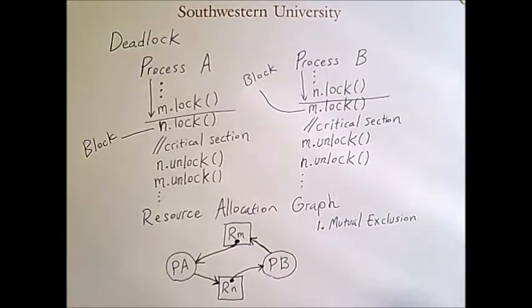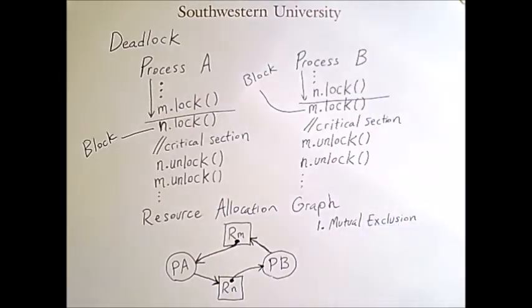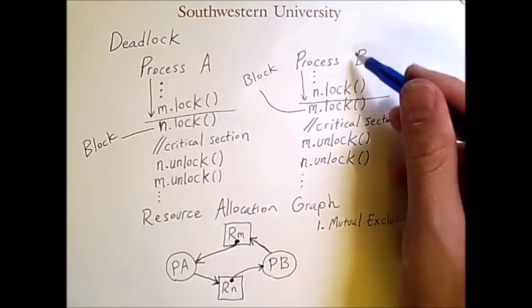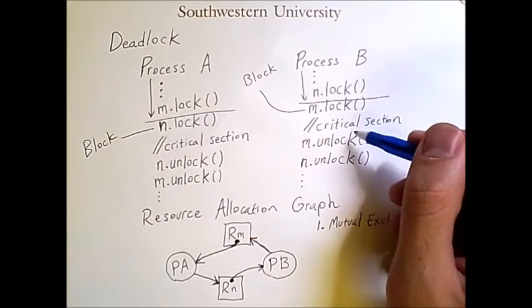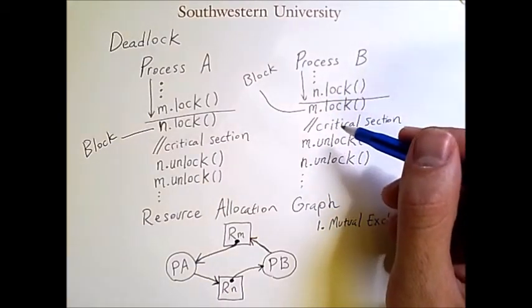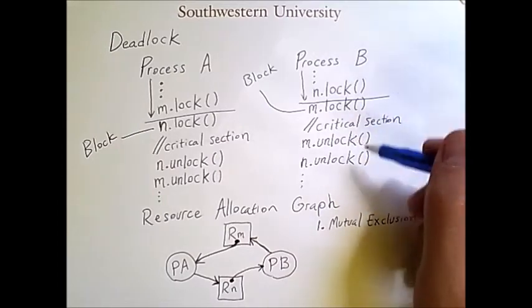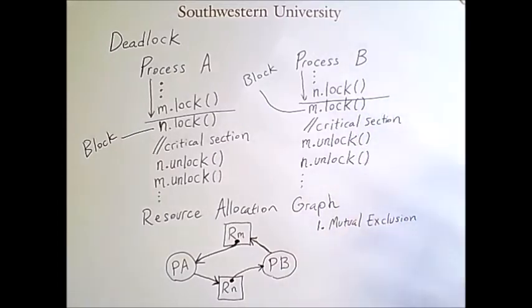So these locks provide mutual exclusion because once process B has locked N, no other process that needs to lock N can continue until process B unlocks that mutex. So we need mutual exclusion.